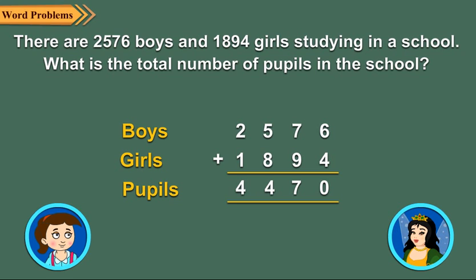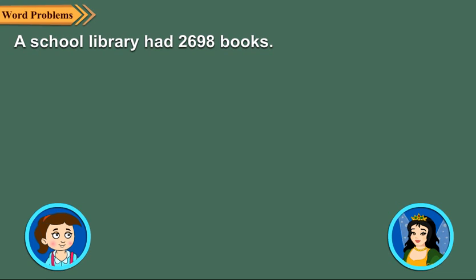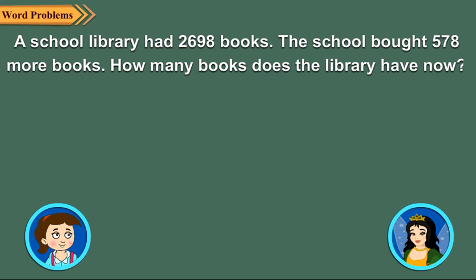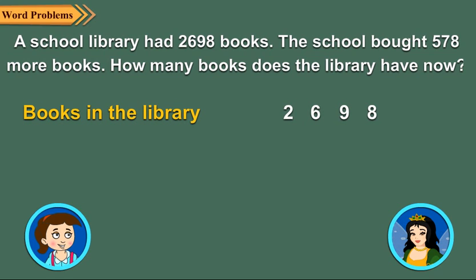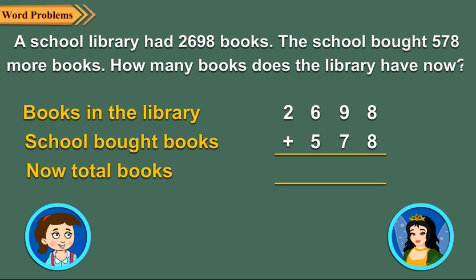Neha, now you try this problem. Okay. A school library had 2,698 books. The school bought 578 more books. How many books does the library have now? Okay Tina, here we have 2,698 books and according to this statement, the school bought 578 more books. So, clearly we have to add 2,698 and 578. So, we find the total number of books in the library are 3,276.